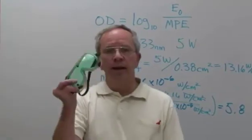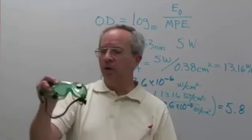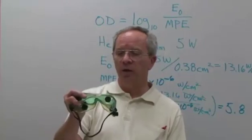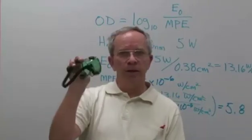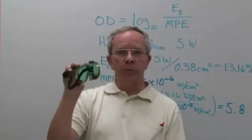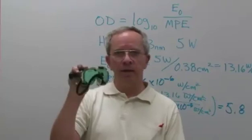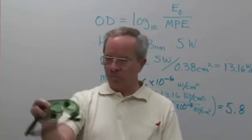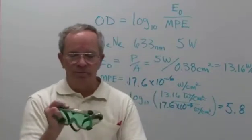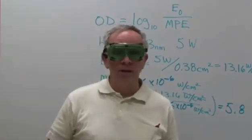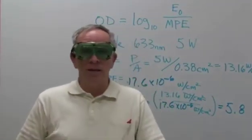It turns out the goggles that we have here are labeled OD6 at 632 nanometers. Sure enough, these goggles are designed to protect our eyes for about 8 hours using a 5 watt helium neon laser. So we can wear these, Derek and I can wear these, and we'll be good to go for all day long using a helium neon laser.